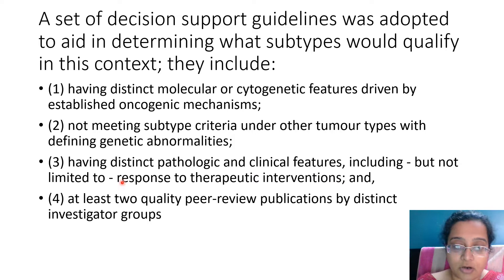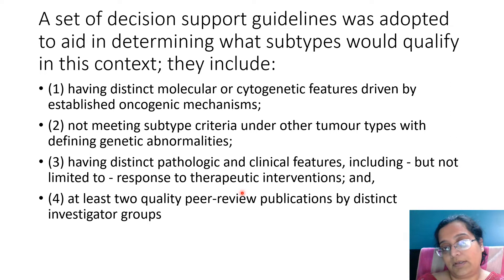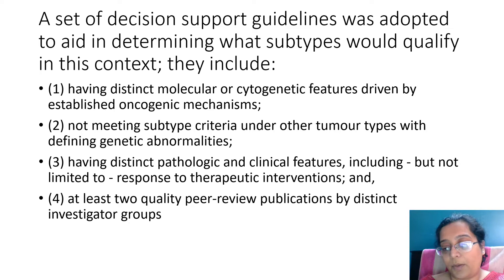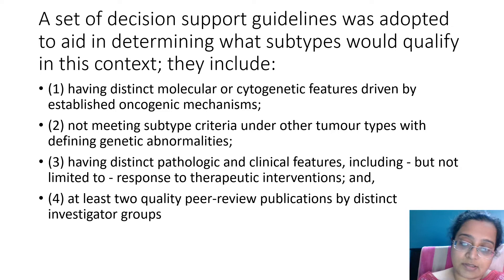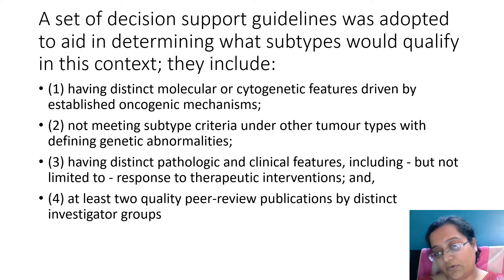Having distinct pathological and clinical features — including but not limited to response to therapy — was also a criterion. You saw this in the CML accelerated phase updates, where response to imatinib therapy was one included entity. Additionally, at least two quality peer-reviewed publications by independent investigator groups are required — quality investigations proving that a mutation, clinical scenario, or specific marker was found uniformly in cases of the entity under study.